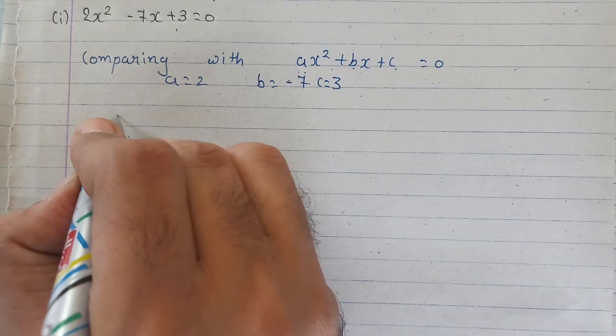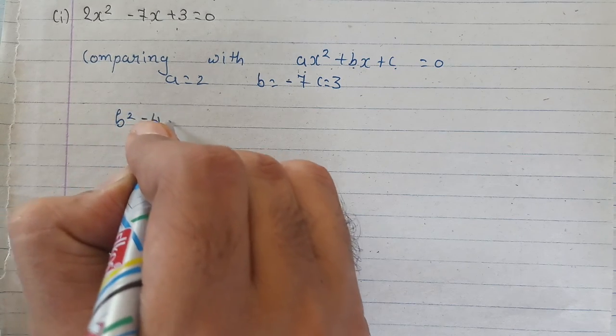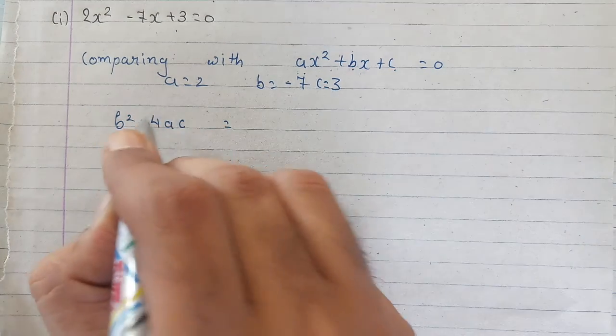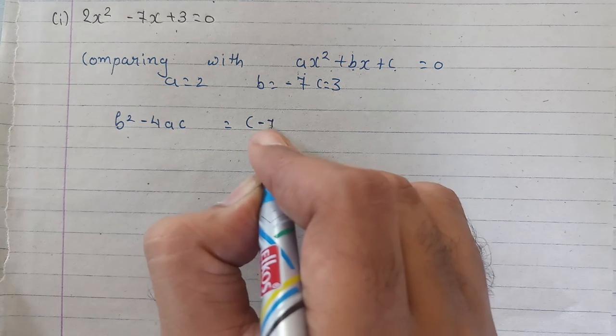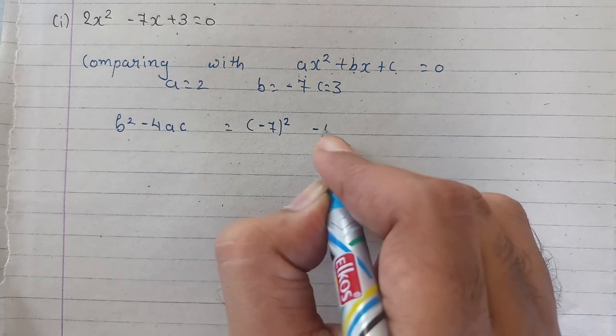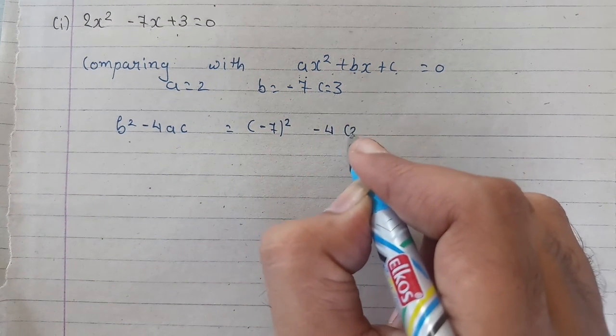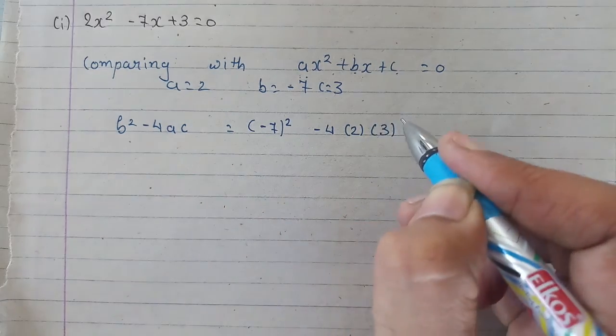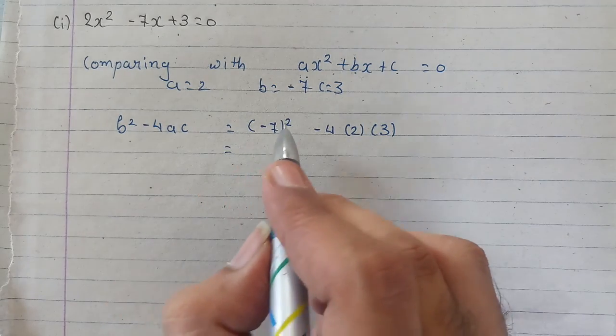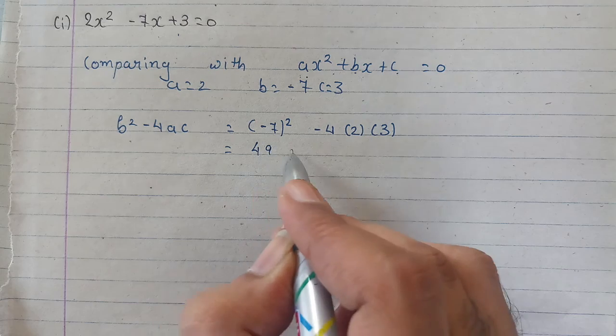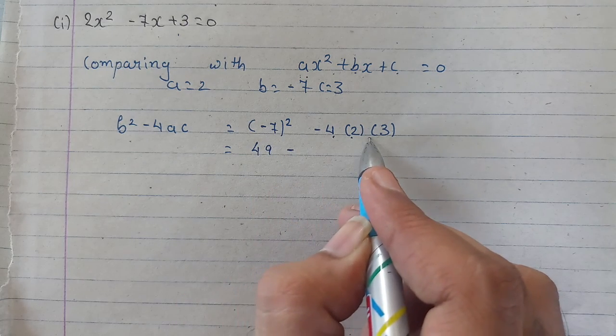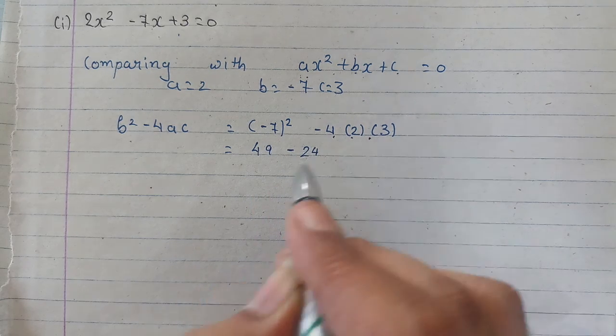Now, let us find out b square minus 4ac. b ki jaga pe we put minus 7 ka square minus 4 into a into c. Minus 7 ka square, that will be 49, 4 into 2 into 3, that's 24.